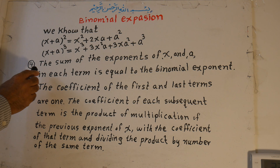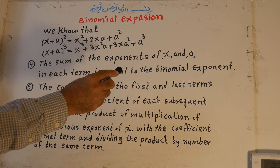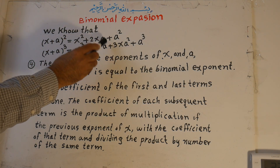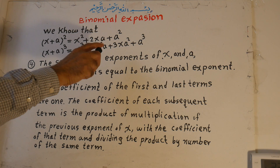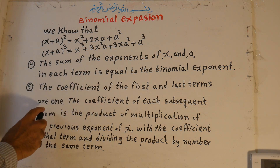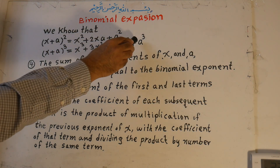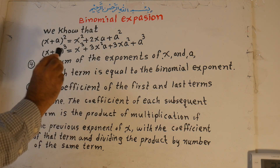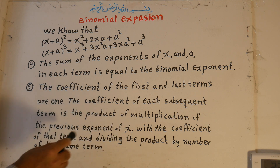Number four: the sum of the exponents of x and a in each term is equal to the binomial exponent. For binomial exponent 2: the sum of exponents of x and a is 2 in each term — 2+0, 1+1, 0+2 all equal 2. For exponent 3: 3+0, 2+1, 1+2, and 0+3 all equal 3. Number five: the coefficients of the first and last terms are 1.